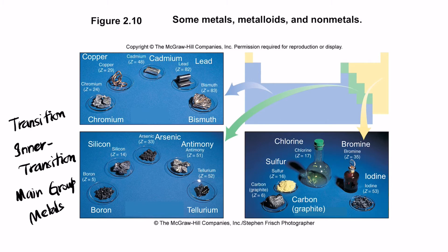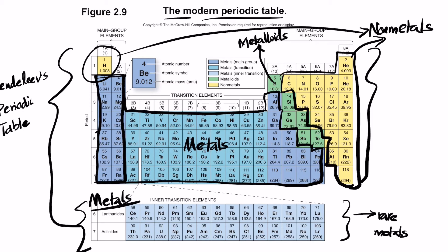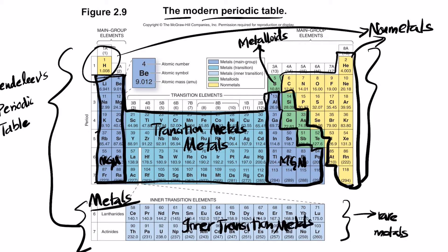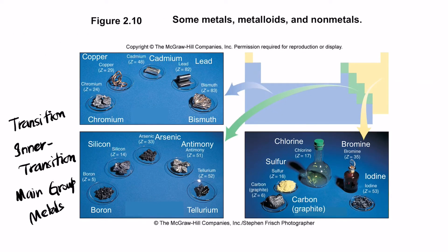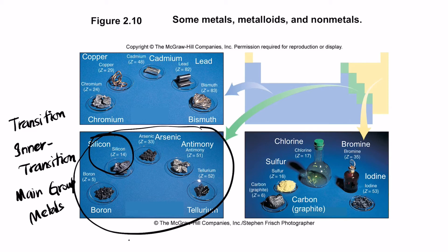Main group metals are the ones you see in the forward part of the periodic table. The elements in the center are called transition metals. The elements in the lower part (the separate rows) are called inner transition metals. Most common metalloids are silicon and germanium, which are commonly used for making semiconductors.